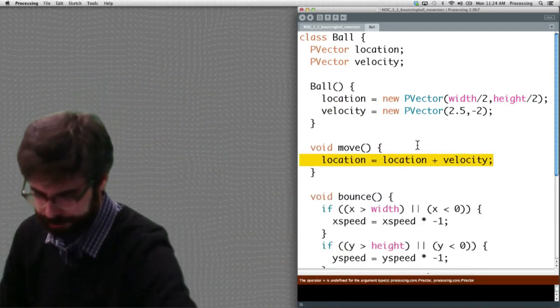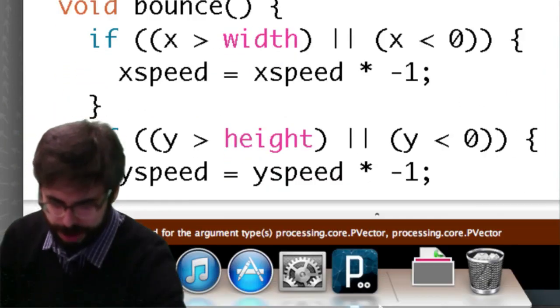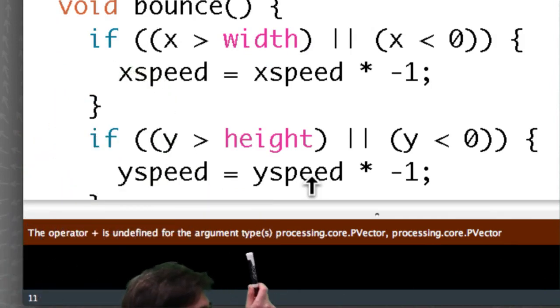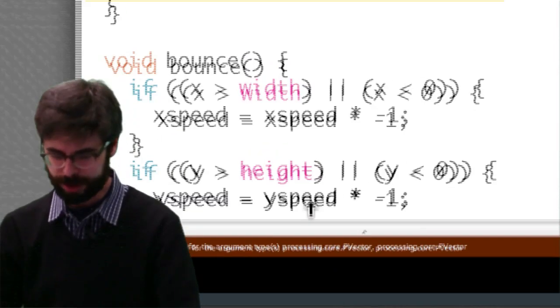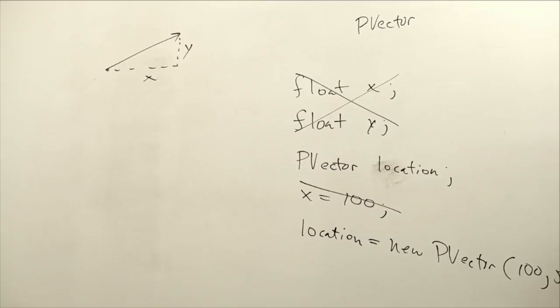OK, now I don't know if you can see this, the zoom worked. The operator plus is undefined for the argument types processing.core.PVector, processing.core.PVector. It's freaking out, right? What's happening here? OK, so now we do need to stop for a moment and go back to the board.